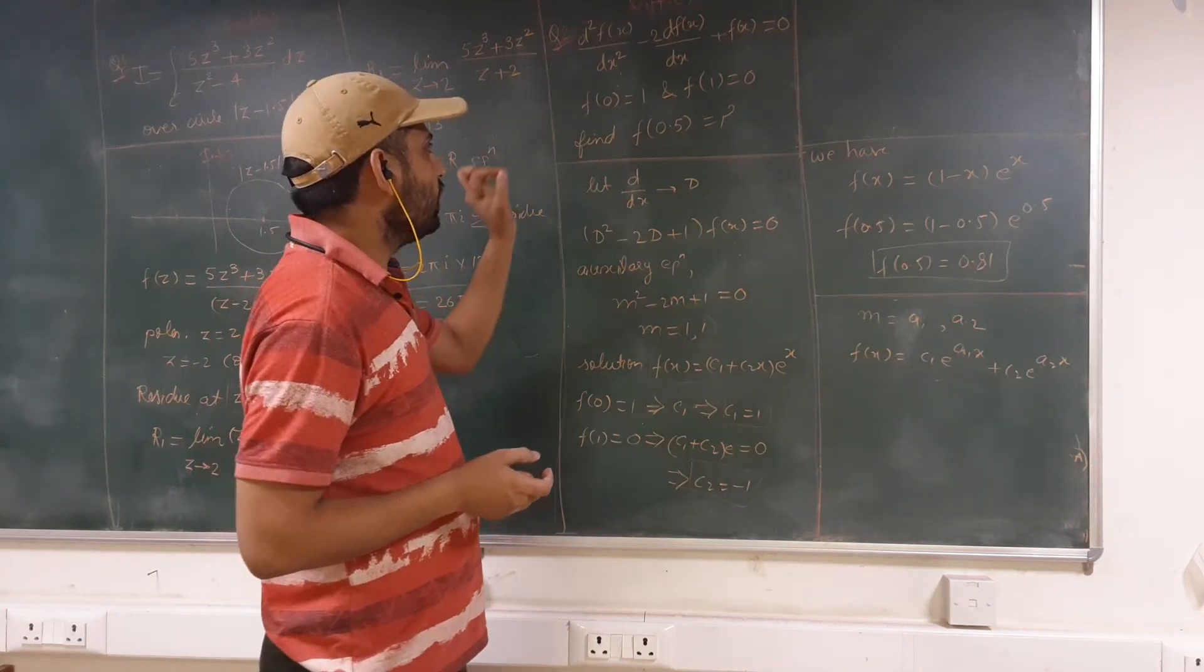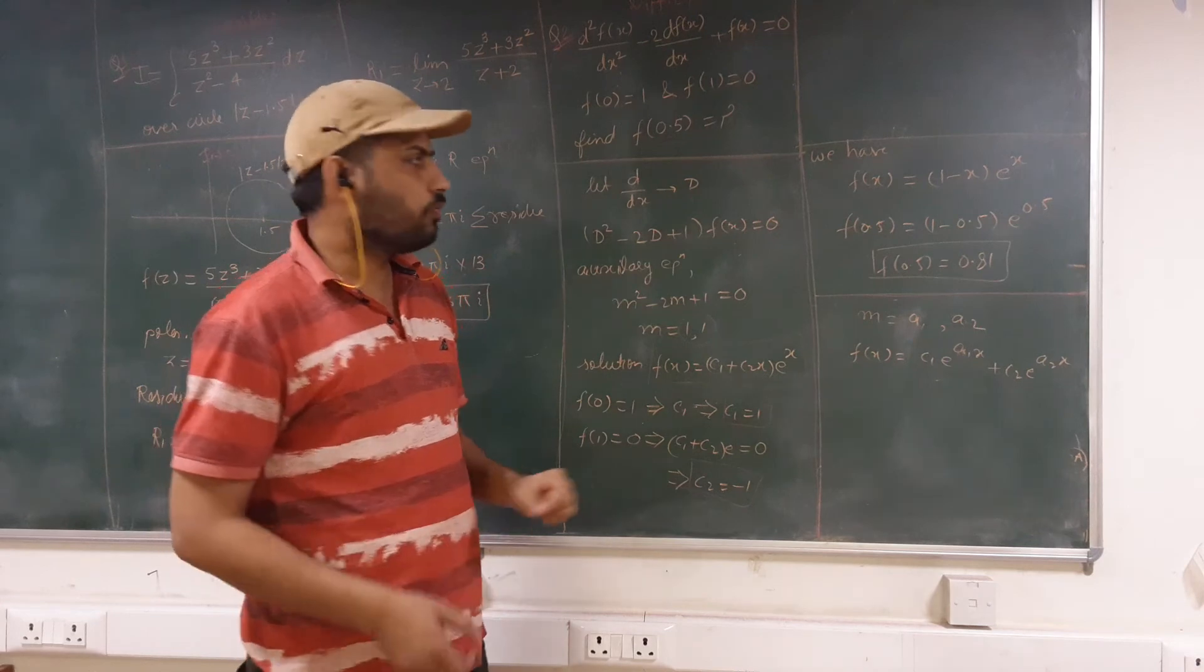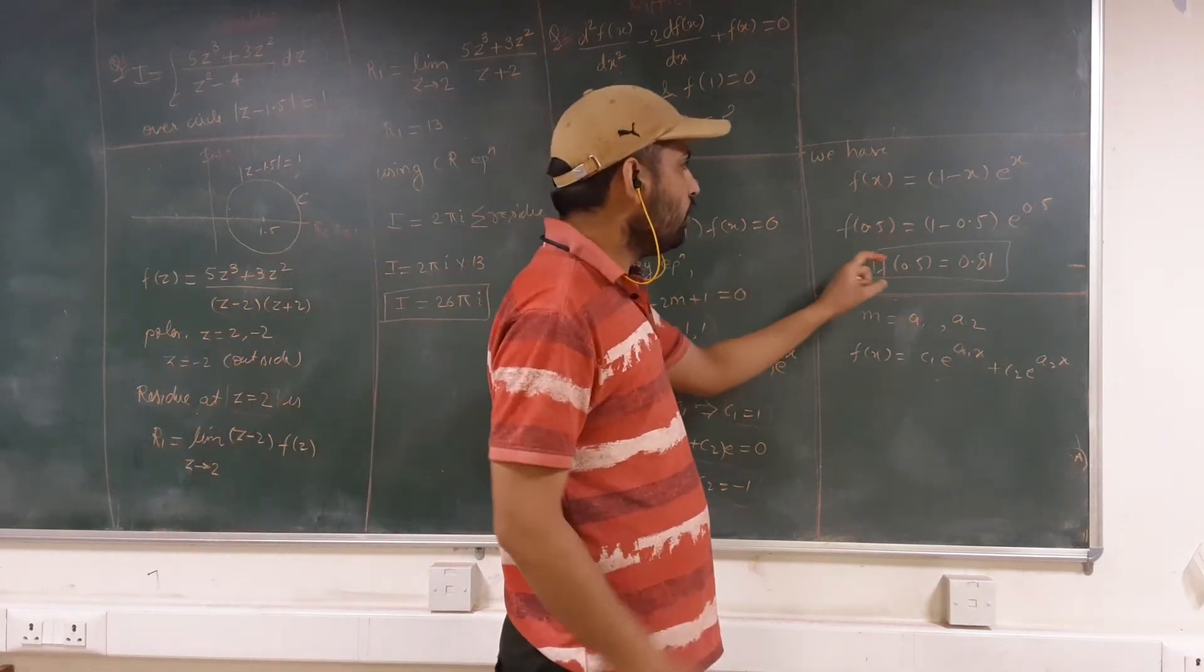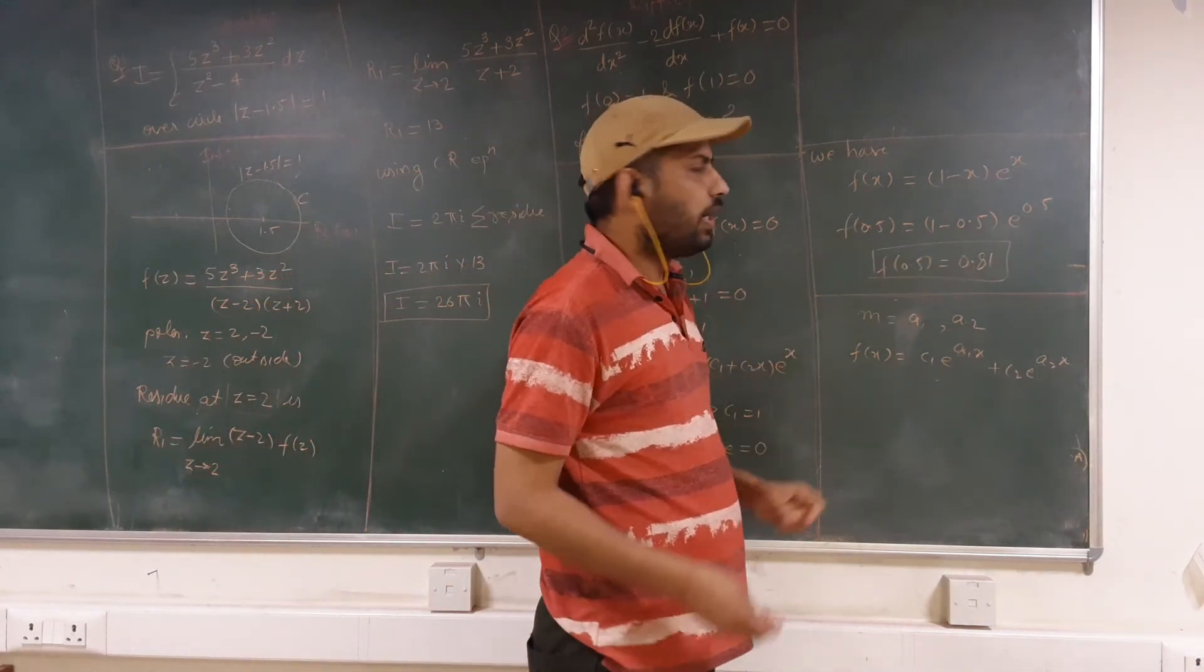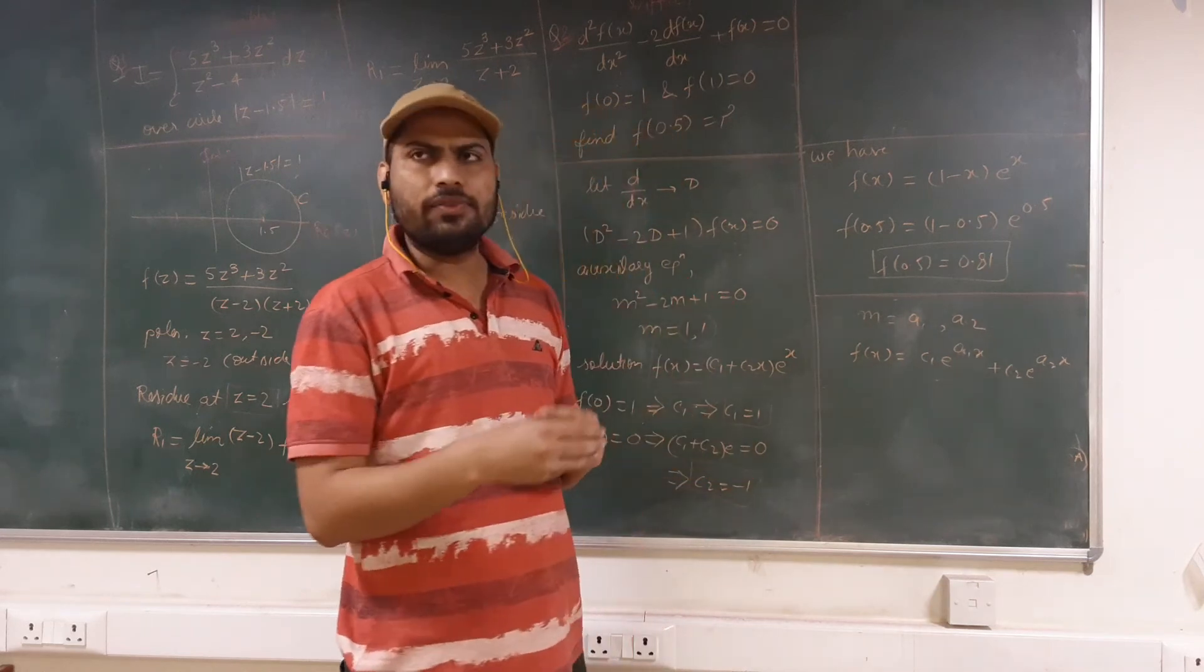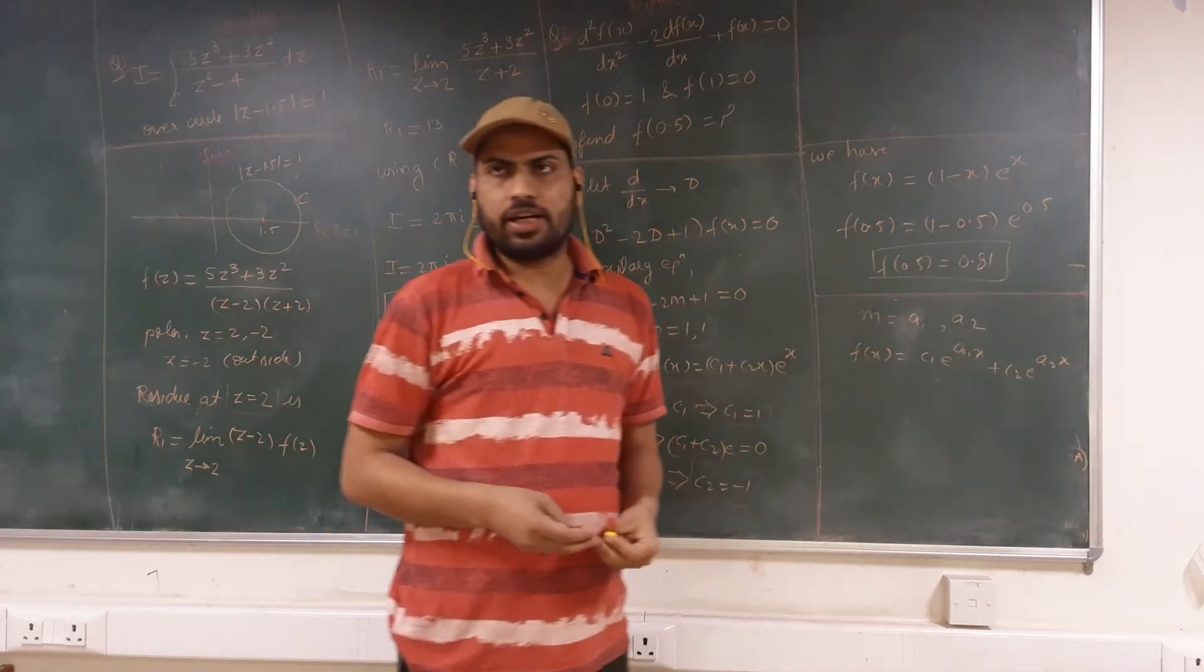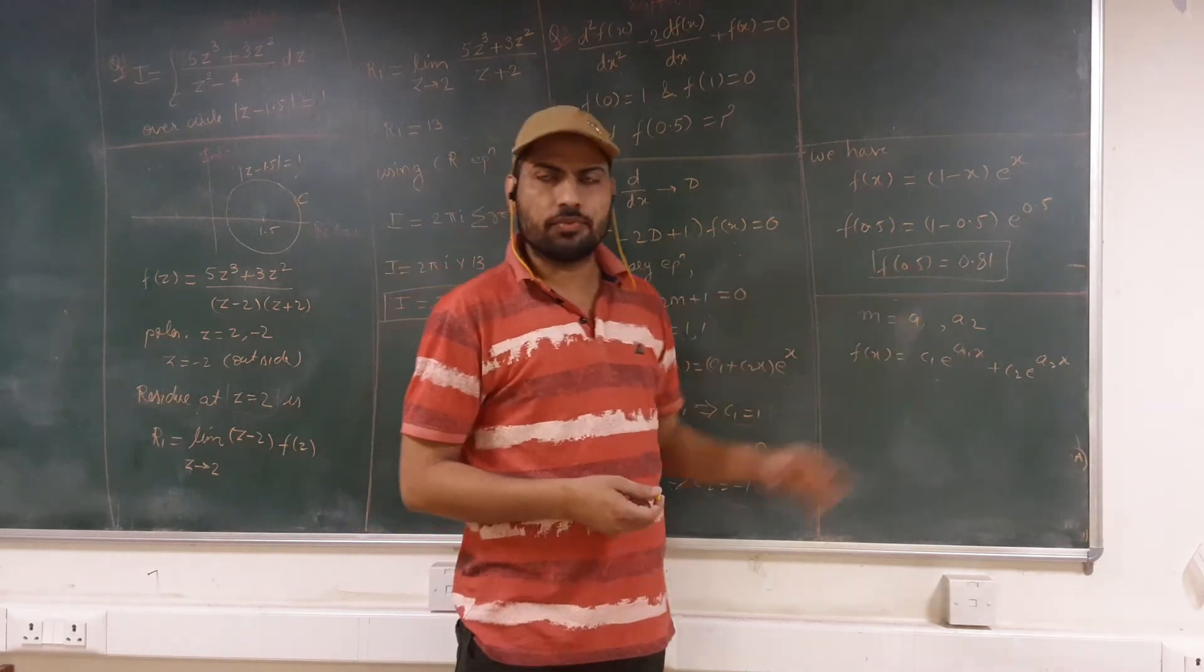Now we want to find the value of this function at x = 0.5. So we can simply put x as 0.5. So the answer will be (1 - 0.5)e^0.5. If we simplify this, the answer comes out to be 0.81. So this will be the final answer of this expression.